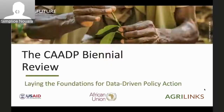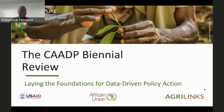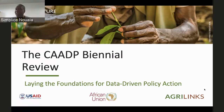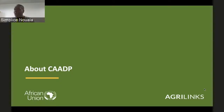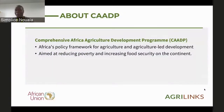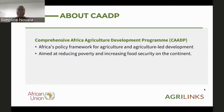Thank you very much, James. I want to thank USAID and PolicyLink AgriLynx for inviting us to share with the audience today the third CAADP Biennial Review Report. Let me first share with you what CAADP is. CAADP is the Comprehensive African Agricultural Development Program — the policy framework for agriculture and agricultural-led development of the continent. Its main objective is to reduce poverty and end hunger on the continent.